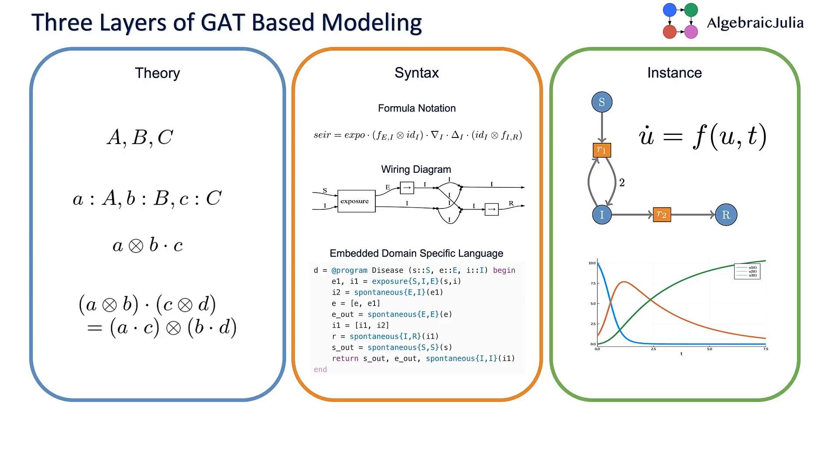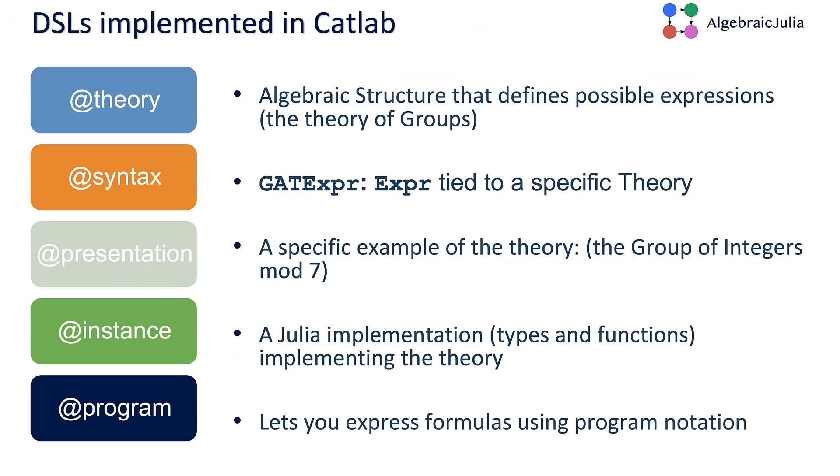Then there's a layer that takes that specification of the theory and generates three interdependent syntaxes: a formula notation that looks like mathematical formulas, wiring diagrams which are these graphical syntax, and embedded domain-specific languages that are custom tailored to the scientific theory you're trying to work with. Then you have the instance layer, where Julia types represent variables, systems, or whatever the concepts are of your scientific theory. You pick Julia types to instantiate that theory, and then you do the numerical computing in Julia.